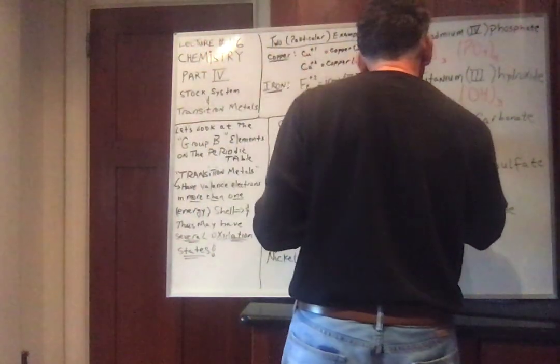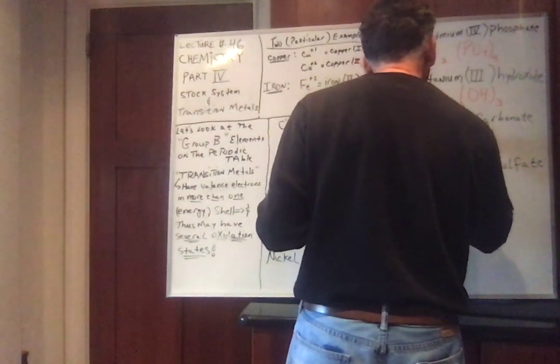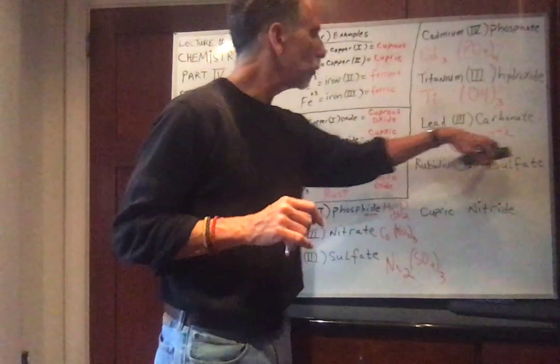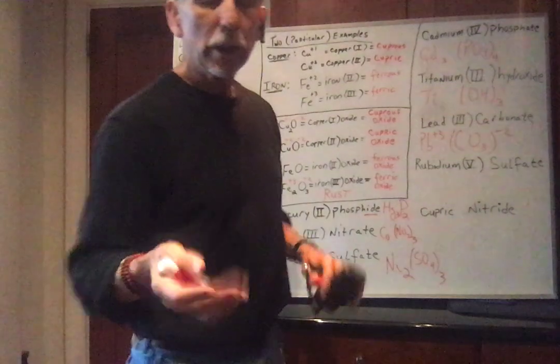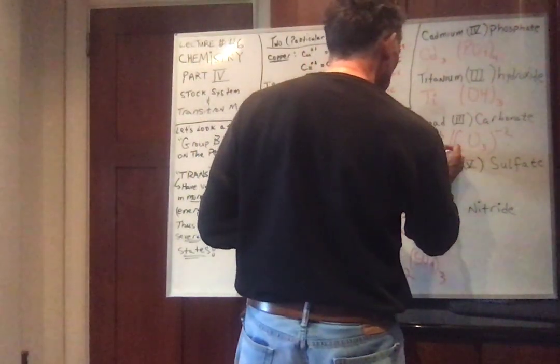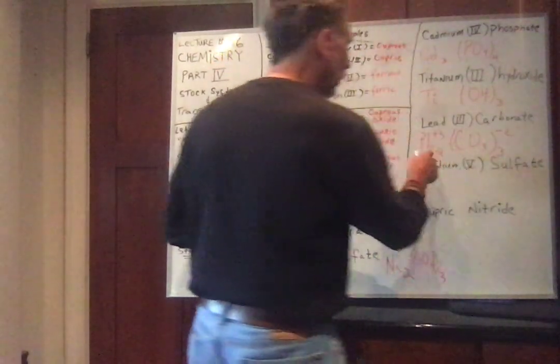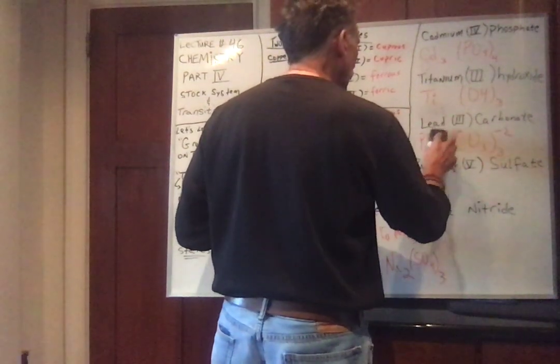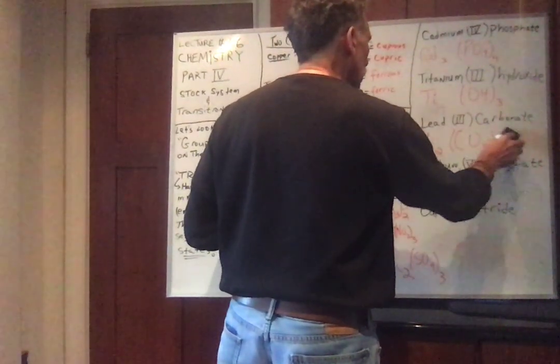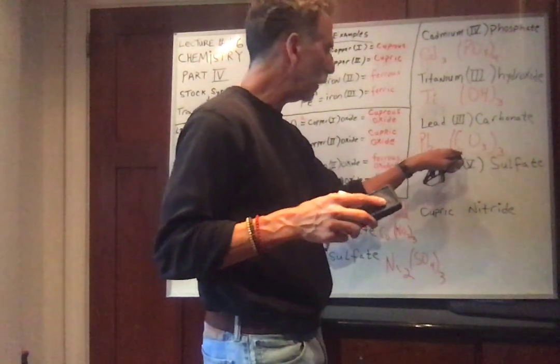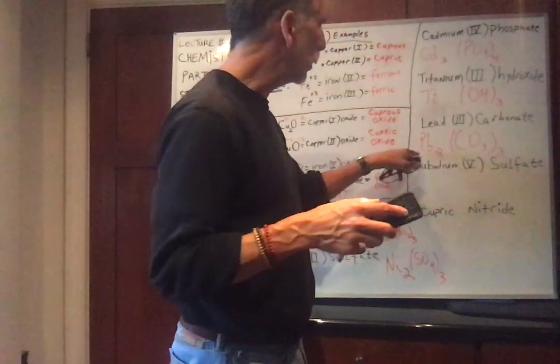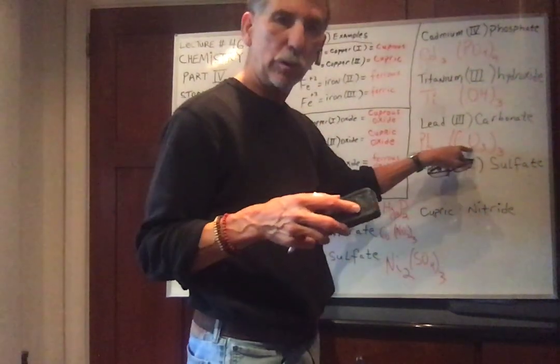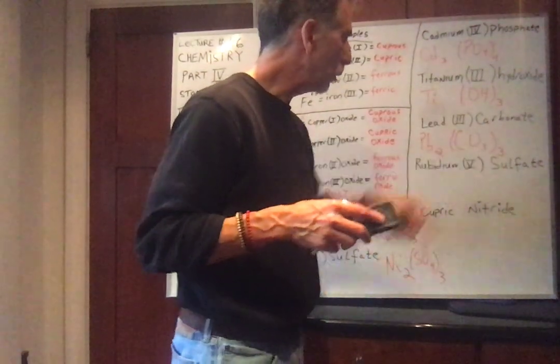Lead 3 carbonate. Pb plus 3, carbonate CO3 minus 2 is the oxidation number. Gives 3, needs 2. Once again, common denominator, if you like, is 6. So if we put a 2 there and a 3 here, the lead now is giving 6 electrons, the carbonate is taking 6 electrons. We can erase the oxidation numbers. Keep the 3 there because there's 3 carbonate ions. So 1 lead 3 carbonate molecule has 2 lead atoms, 3 carbon atoms, and 9 oxygen atoms because the 3 is outside the parentheses.